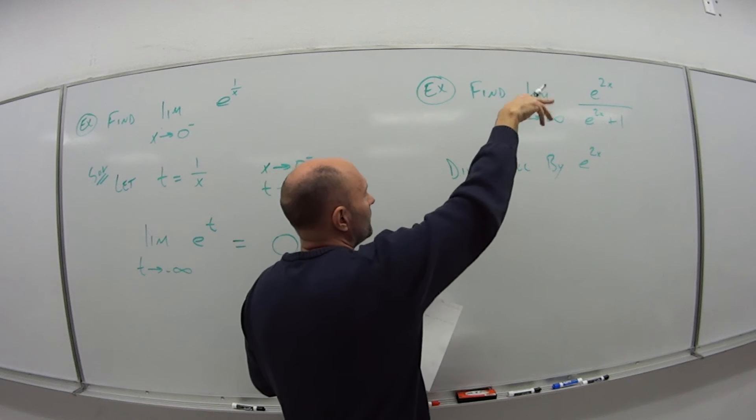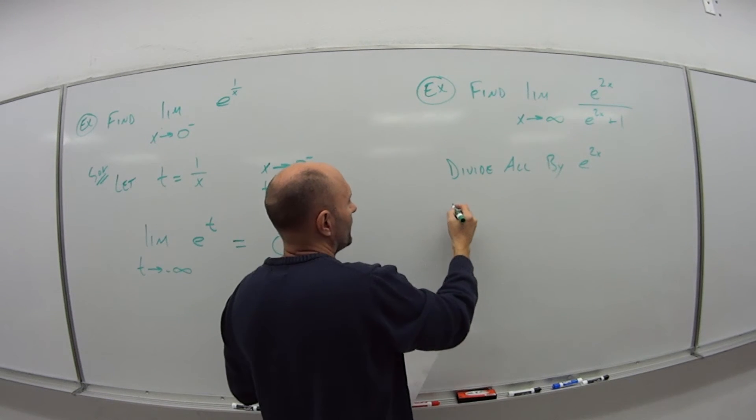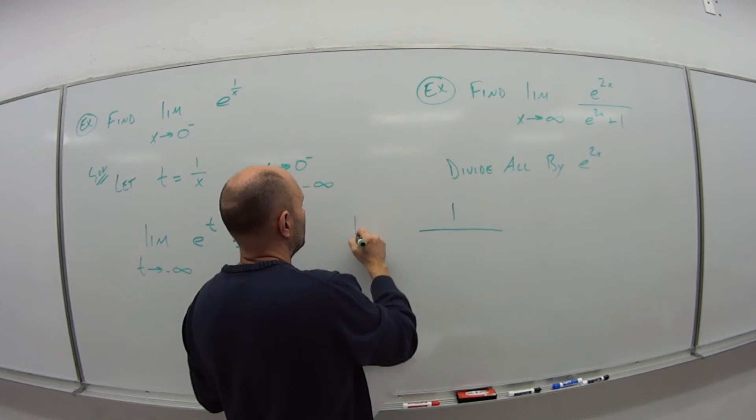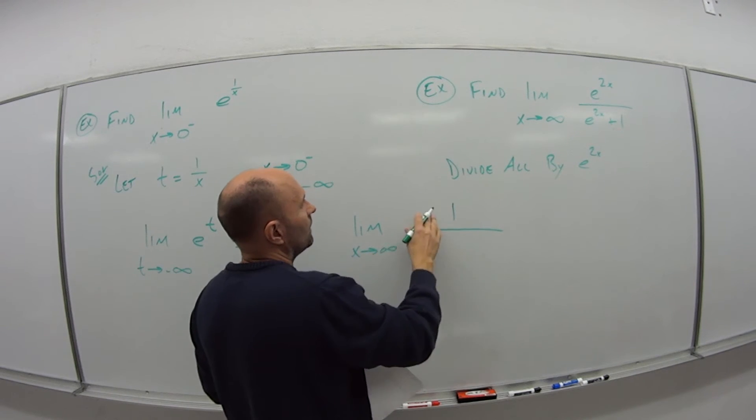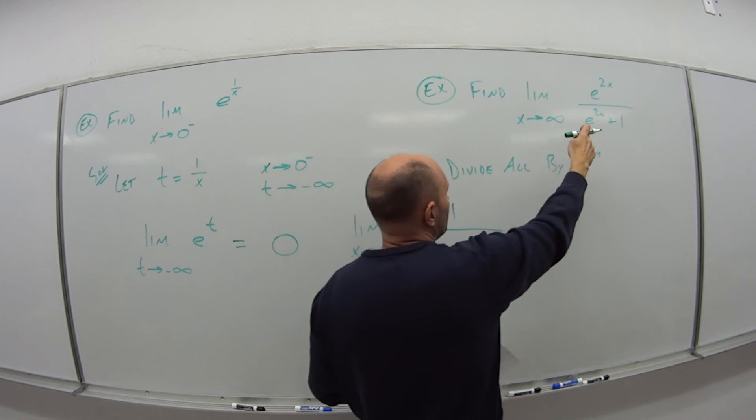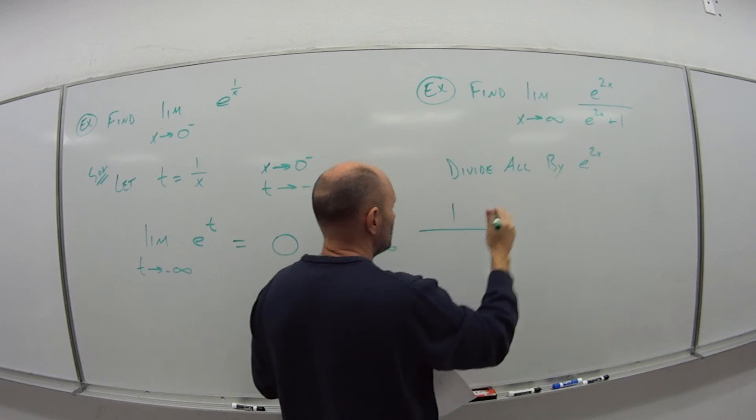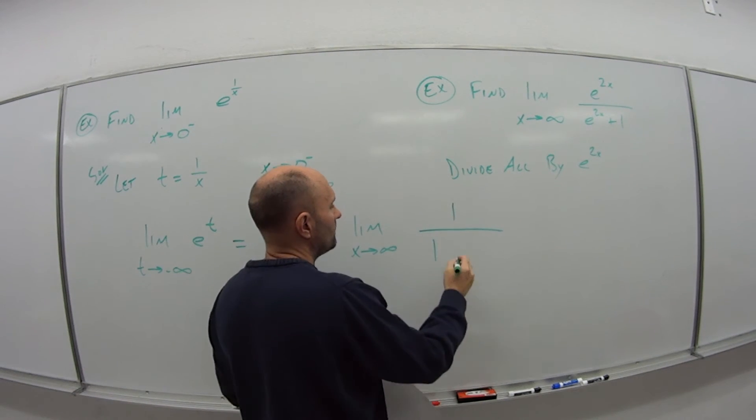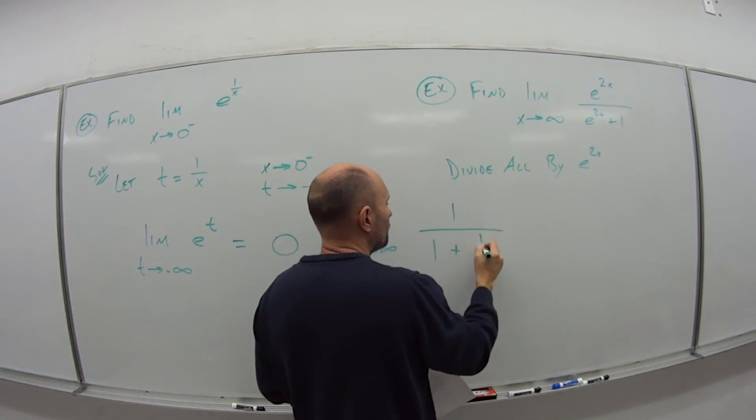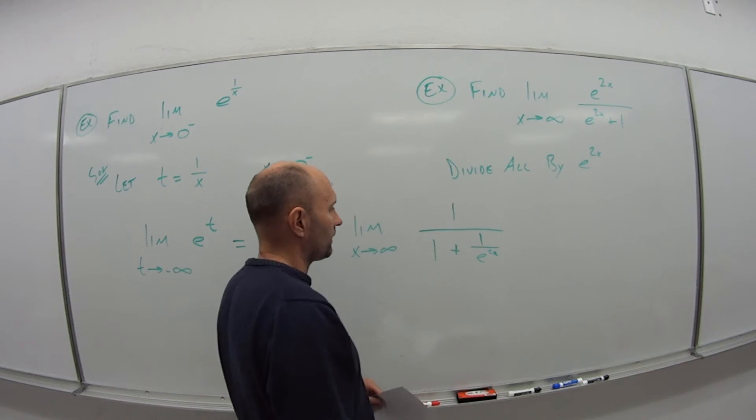So you get what? The top divided by e to the 2x is 1, and we still have the limit as x goes to infinity. The top becomes 1. E to the 2x divided by e to the 2x, that becomes 1, and then plus 1 over e to the 2x.